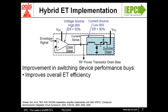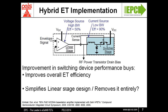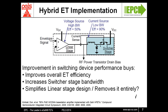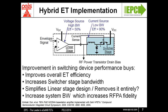This, in turn, will simplify the linear stage design or, in extreme cases, can remove the linear stage entirely. Alternatively, the linear stage bandwidth can be proportionally increased, and this allows you to actually improve the fidelity of the RF power amplifier.